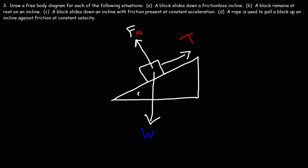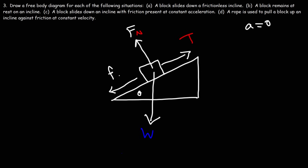We're pulling the block up against friction at constant velocity, so we're dealing with kinetic friction. Because the velocity is constant, there's no acceleration. So the forces are balanced in the x direction, which means the tension force equals fk.